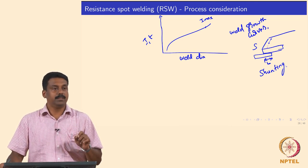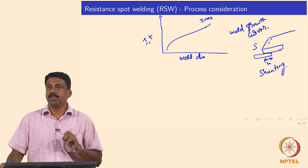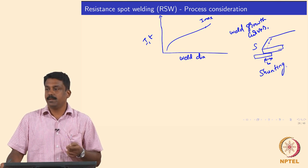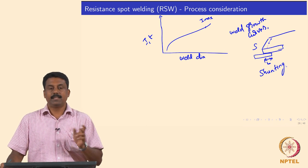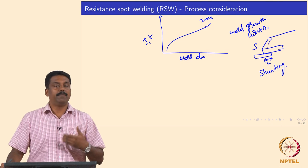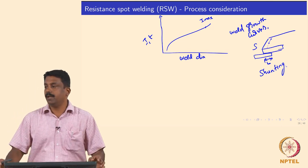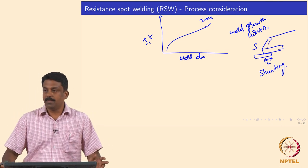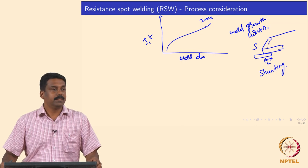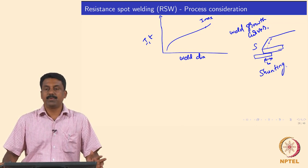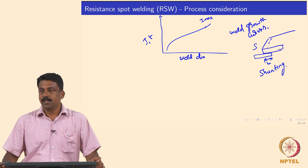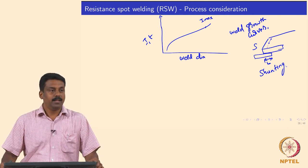That is what we covered in the last class. In this class we will look at some testing methods used for spot welding — resistance spot welding — and some definitions of parameters used to define weld quality and mechanical properties, and then we will move on to some problems encountered in resistance spot welding.